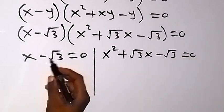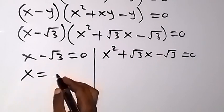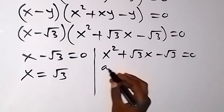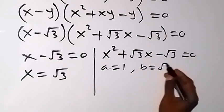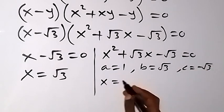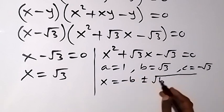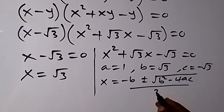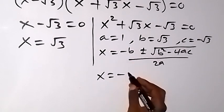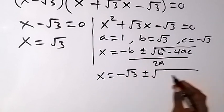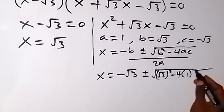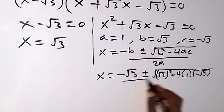So from here, we can take minus root 3 to this side — it becomes plus — and we have x equals to root 3. On this side, we have something of the form of a quadratic equation, where a is 1, b is root 3, and c is minus root 3. So when we use the formula x equals to minus b plus or minus square root of b squared minus 4ac, all over 2a. We substitute and we have x equals to minus root 3 plus or minus square root of root 3 squared, then minus 4 times 1 times minus root 3, then over 2 times 1.